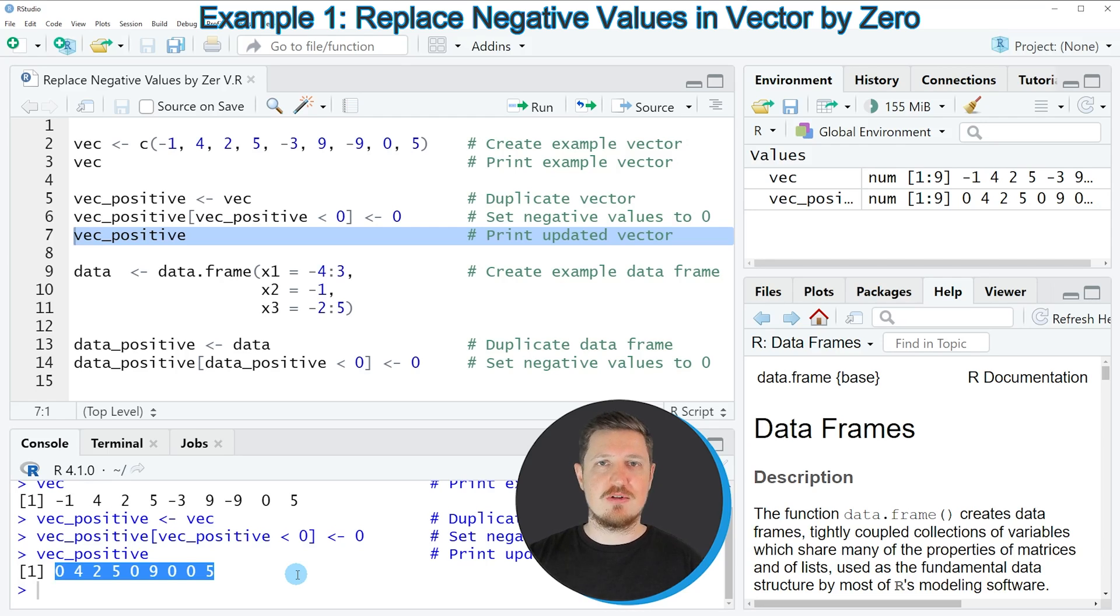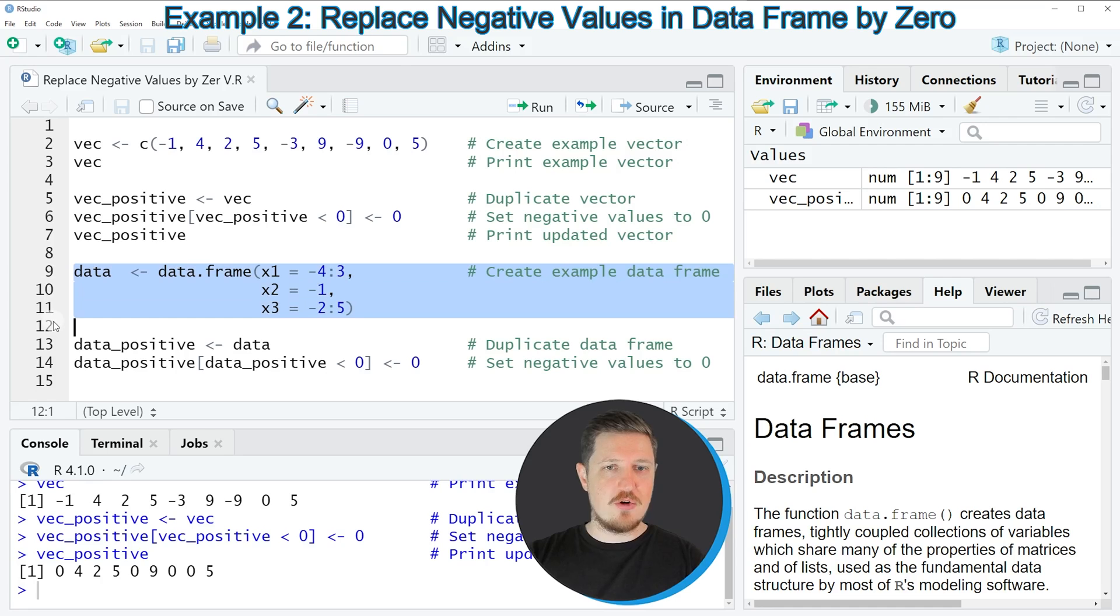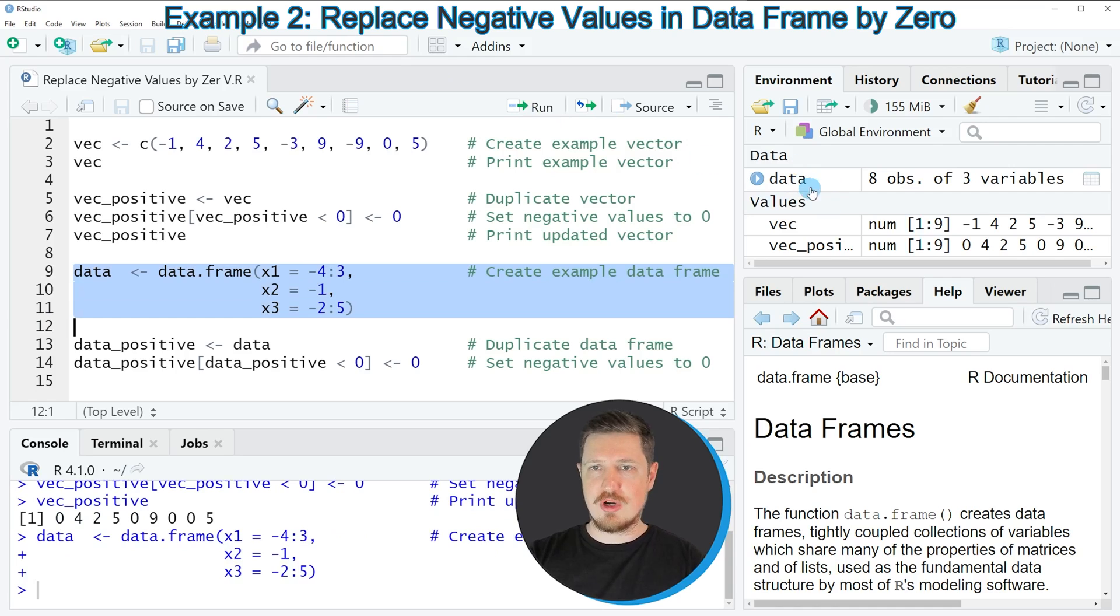However it's also possible to replace the negative values in a data frame object by zero. And this is what I want to show you in the second example of this tutorial. In lines 9 to 11 of the code we are first creating some example data. If you run these lines of code you can see at the top right of RStudio that a new data frame object is appearing at the top right which is called data.